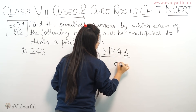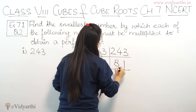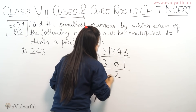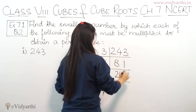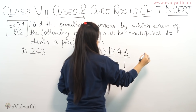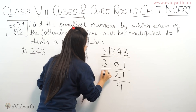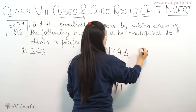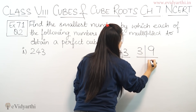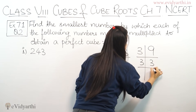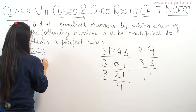Dividing 243 by 3 we get 81. Again dividing by 3 gives 27. Again with 3 we get 9. Then again dividing by 3 we get 3, and then 3 gives 1. So the prime factorization is complete.